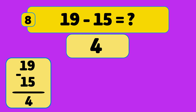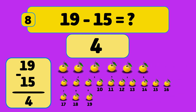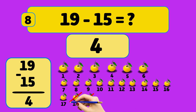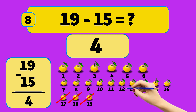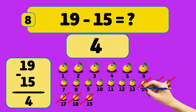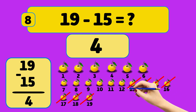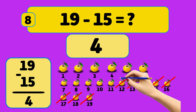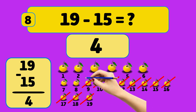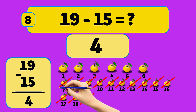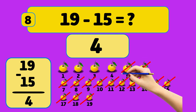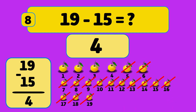We start with nineteen oranges and remove them one by one: eighteen, seventeen, sixteen, fifteen, fourteen, thirteen, twelve, eleven, ten, nine, eight, seven, six, five. Now we have four oranges left.